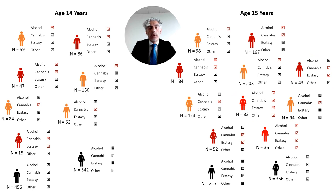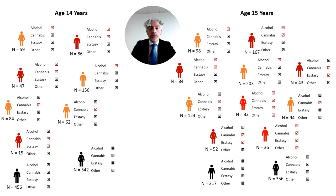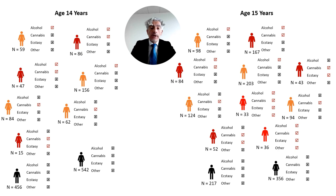I may use the same arbitrary rules I made up for the sample at age 14, or I may create additional rules — for example, the bright red individuals here are those that report use of multiple substances. However, arbitrary rules are inadequate because they may not represent key differences across individuals, and they are not reliable and meaningful across different studies.